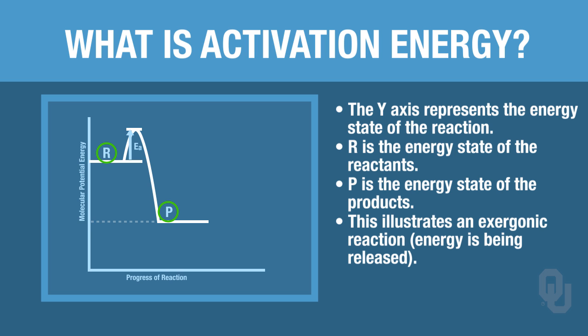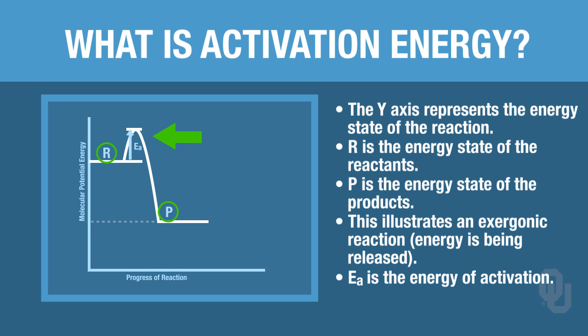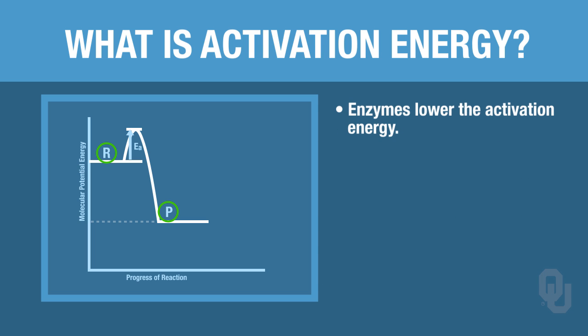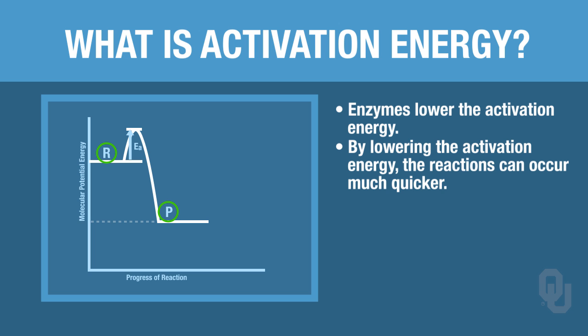The other thing on this graph that needs to be explained is Ea. Ea is another way of saying activation energy, or energy of activation. Between the top line and the line representing the potential energy of the reactants — in between that — is the energy of activation. That's the amount of energy needed for a chemical reaction to actually occur. We know that enzymes actually lower the activation energy, and by lowering it, reactions can occur much quicker.